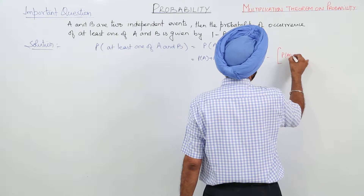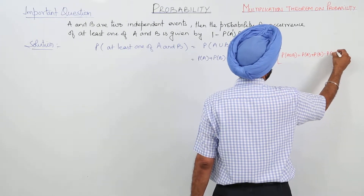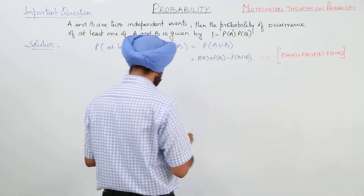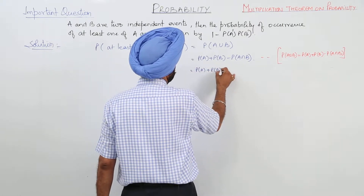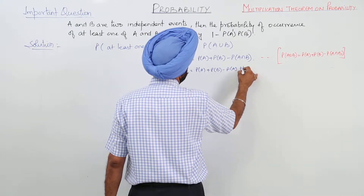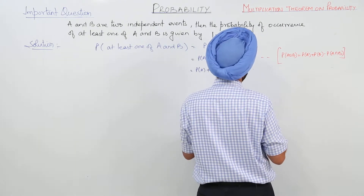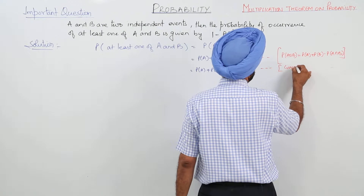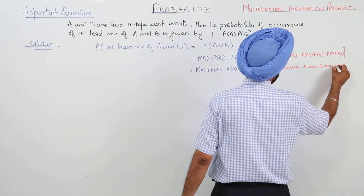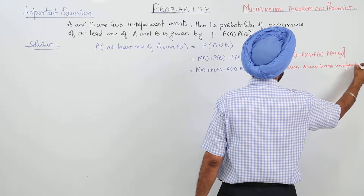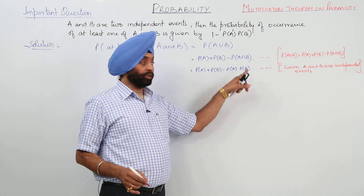So probability of A or B equals probability of A plus probability of B minus probability of A times probability of B. The condition given is that A and B are independent events. Therefore, we can write P(A∩B) as P(A) times P(B).